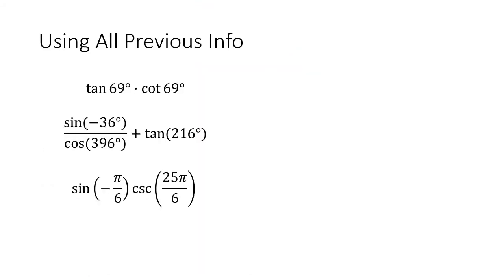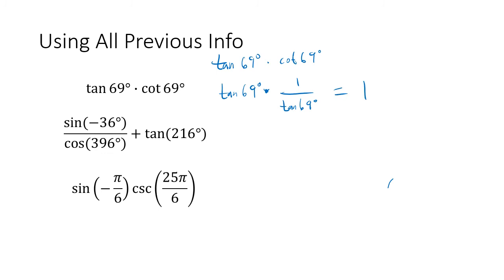Let's put all of this together and simplify some expressions. The tangent of 69 degrees times the cotangent of 69 degrees. Using the reciprocal identity, cotangent is 1 over tangent of 69 degrees — so this is just tangent of 69 divided by tangent of 69, which is 1. You can also write tangent as sine over cosine times cosine over sine — sine divided by sine is 1, cosine divided by cosine is 1, still just 1.